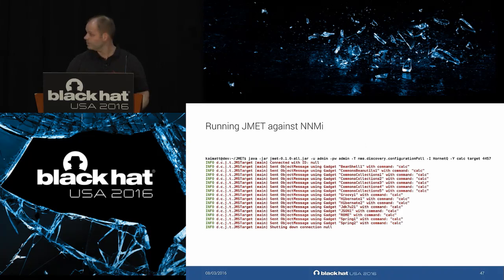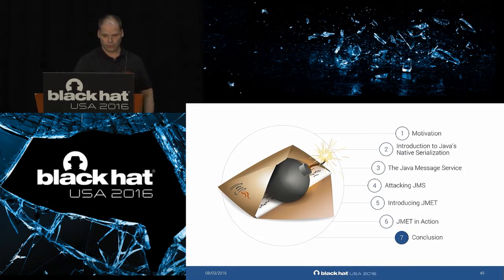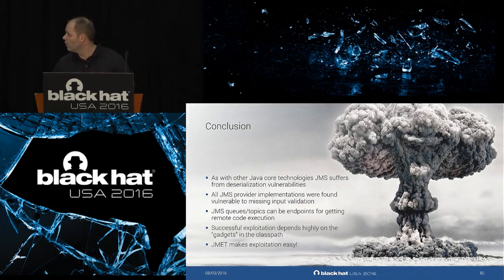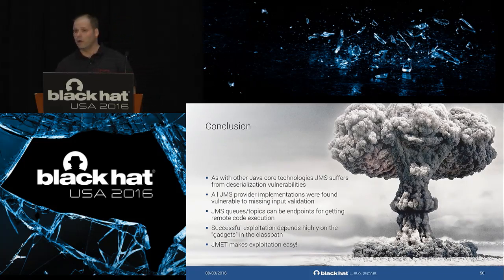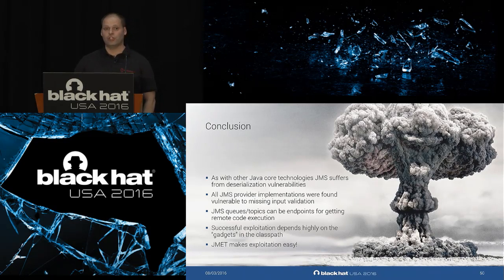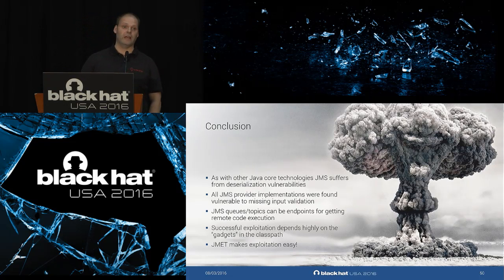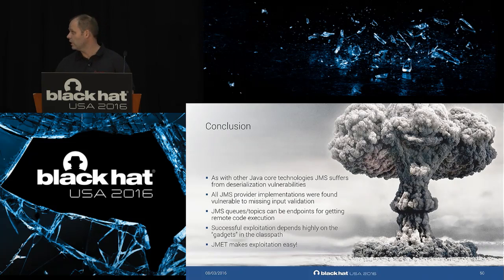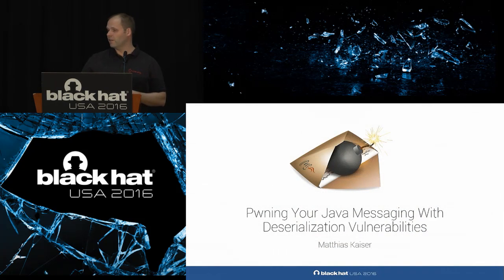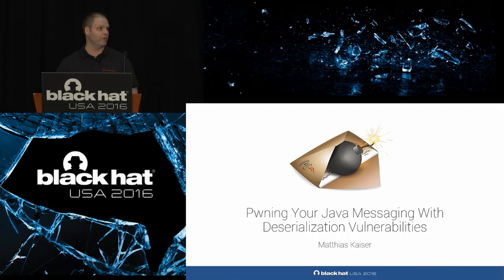Now for the conclusion: as with several core technologies in the Java world, JMS suffers from the deserialization problem. All JMS providers I looked at were vulnerable to deserialization of untrusted input. JMS topics and queues can be endpoints for exploitation in target environments, such as a client's corporate network. The exploitation of JMS highly depends on which gadgets are in the classpath of the target system. And JMet is a tool to make exploitation easier and to support your assessments.